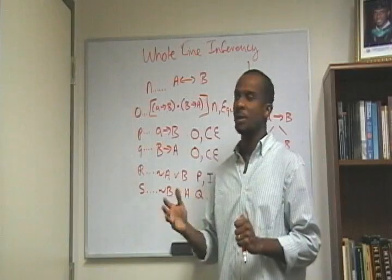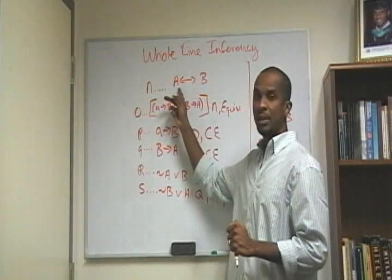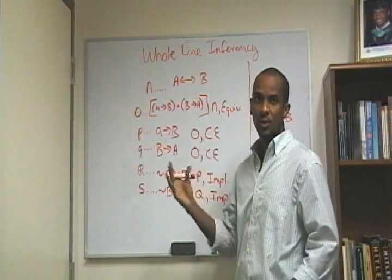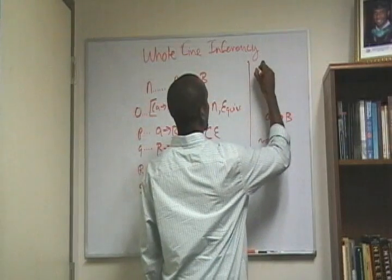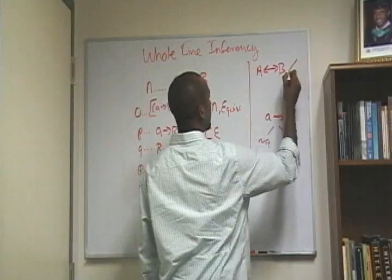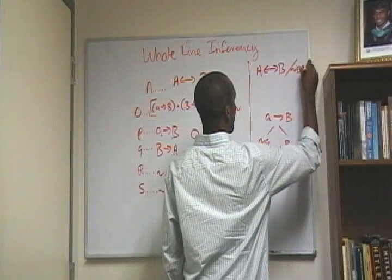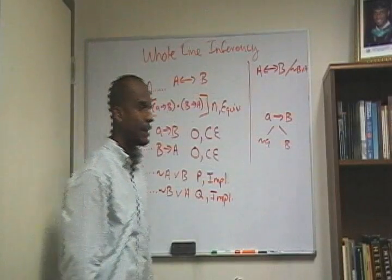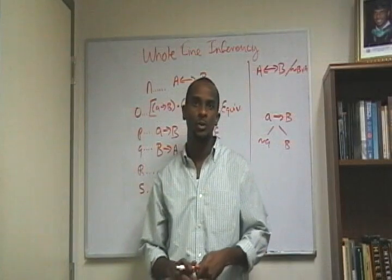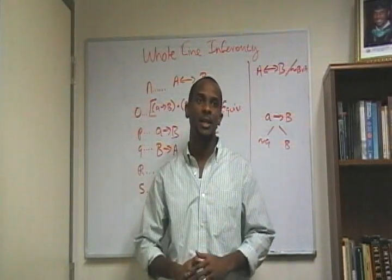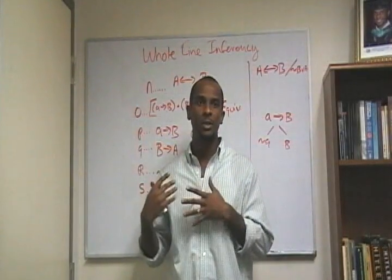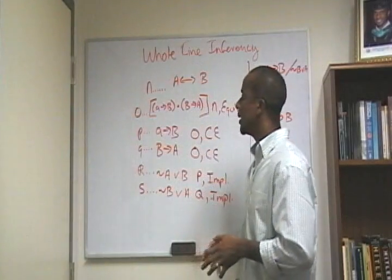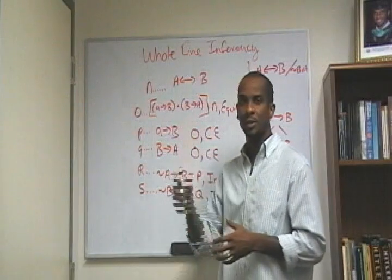I hope you can see how, starting from line N — A if and only if B — we're able to derive not B or A. Given A if and only if B, the goal is to arrive at not B or A, and these are the steps you go through. This will conclude my introductory discussion on symbolic logic. After this it gets quite a bit more complicated, but hopefully these past eight or nine or ten videos have given you the basis you need to do whole line inferencing and follow your argument consistently.